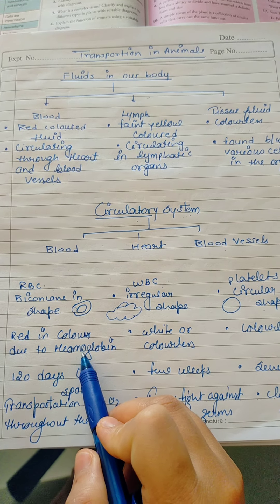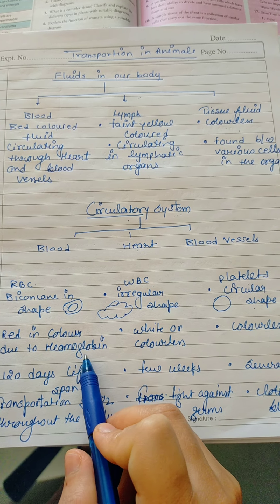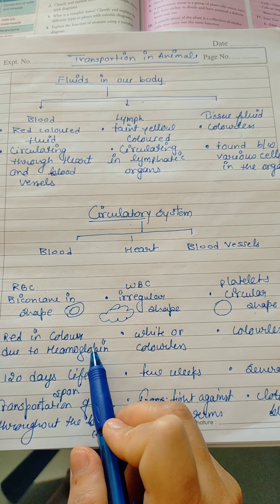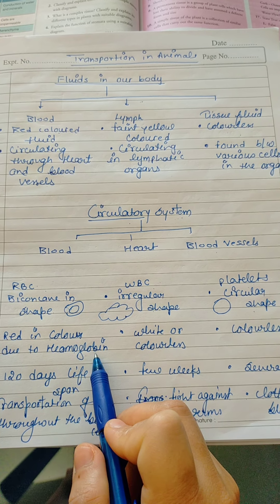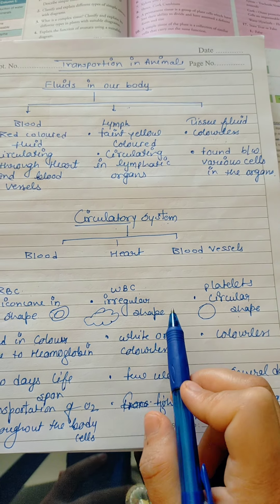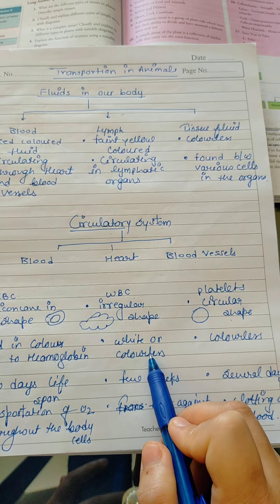This is red in color. And why is RBC red color? Because it has hemoglobin. Hemoglobin is the respiratory pigment. It's a respiratory pigment, very important thing. WBCs do not have hemoglobin, so it is colorless.